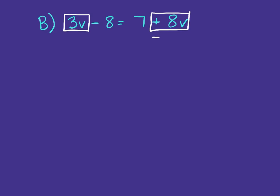I'm going to go ahead and subtract 8V from the right side. What I do to one side, I must do to the other. And that will cancel out the 8V on the right. And so we get 3V minus 8V is negative 5V. I'm going to go ahead and bring down the rest of the equation.